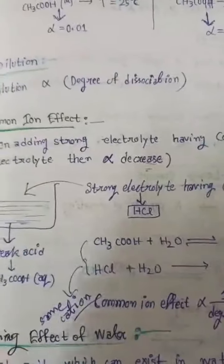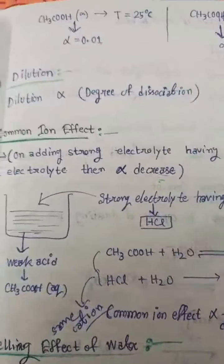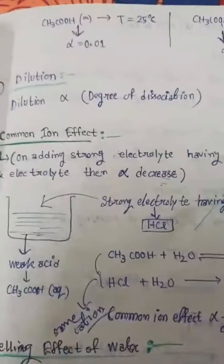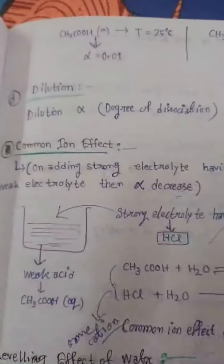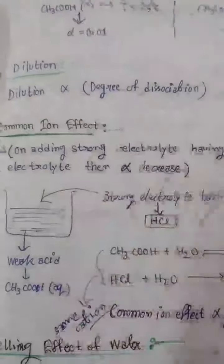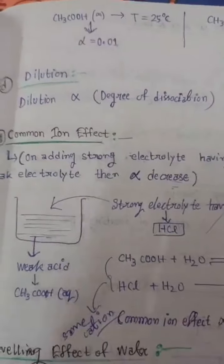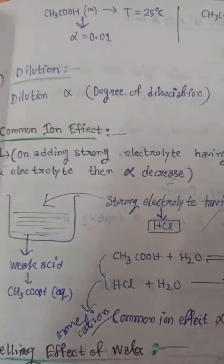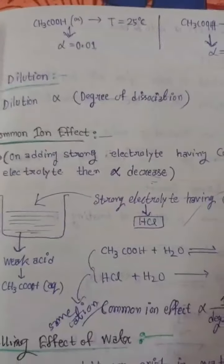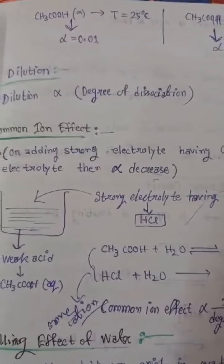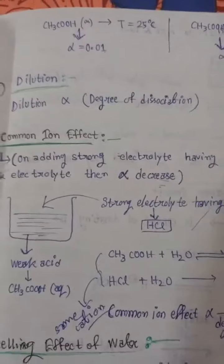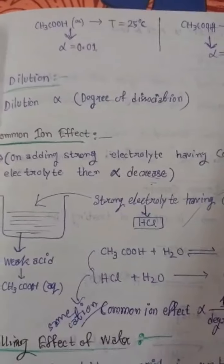Common ion effect হলো basically যখন একটা electrolyte addition এর জন্য same ion যে ion create হচ্ছে তার জন্য যে electrolyte সেটা dissociate হচ্ছে তার alpha decrease করবে। সিস্টেম চাইবে backward reaction টাকে continue করতে — এটাই common ion effect এর মূল application। Qualitative analysis এ আমরা সেটাকে use করি।